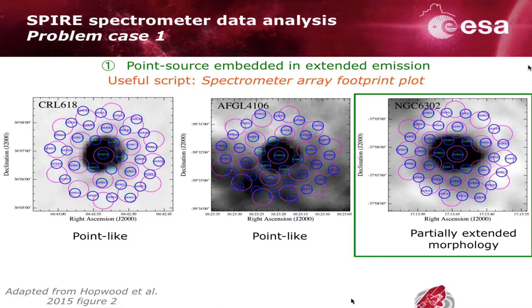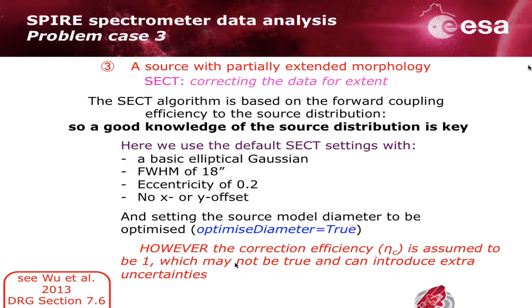Going back to the array footprint plot, NGC 6302 is the one plotted on the right — we can see in the spectrometer map it's a slight oval. Now we can go ahead and apply the SECT correction. You can read all about the algorithm in Wieztel 2013 and also in the DRG and the handbook. The algorithm is based on the forward coupling efficiency to the source distribution, so it is really important to have a good knowledge of the source distribution to get a good result.